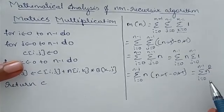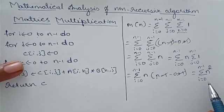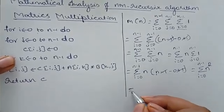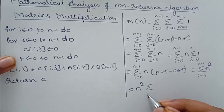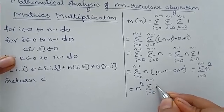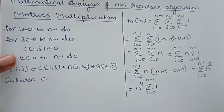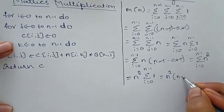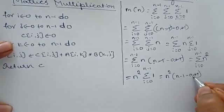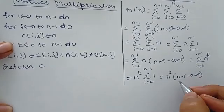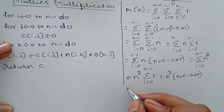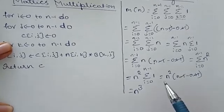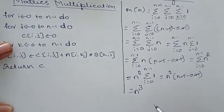We now solve the outermost summation i=0 to n−1 of n². Since n² is an order of growth, we take it out: n² × summation i=0 to n−1 of 1. Solving: (n−1) − 0 + 1 = n. So the result is n² × n = n³. The mathematical analysis gives us n³.